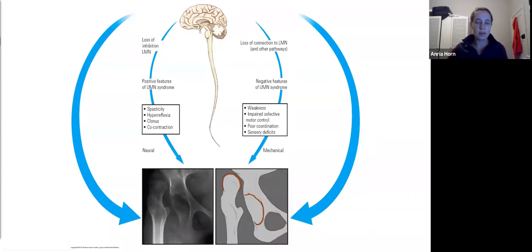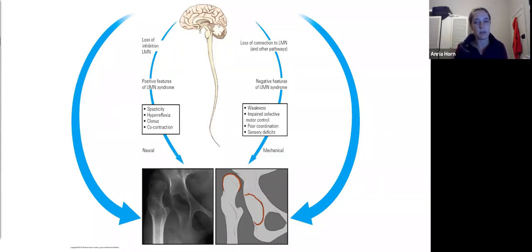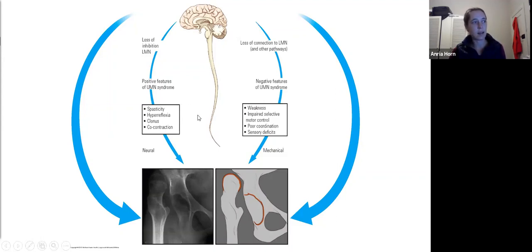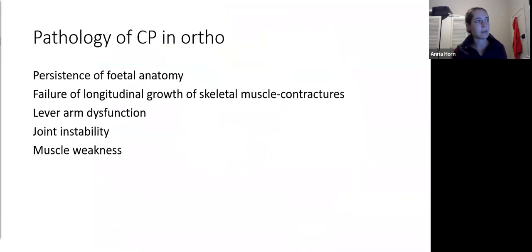This graph illustrates the downstream effects of the brain injury or upper motor neuron lesion in CP. The problem is really too little inhibition of the lower motor neuron system — that central inhibitory process is absent. As a result you get positive features: spasticity, hyperreflexia, clonus, and co-contraction of muscles. There are also negative features — weakness, impaired selective motor control, poor coordination, and sensory deficits — and these we cannot treat. Both positive and negative features make up the clinical picture in CP.